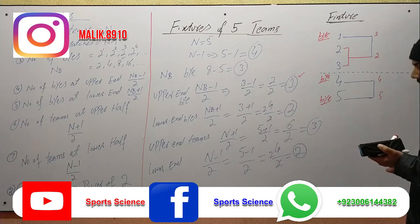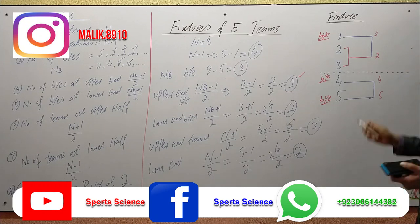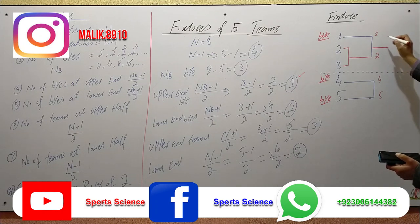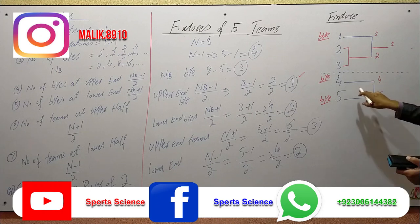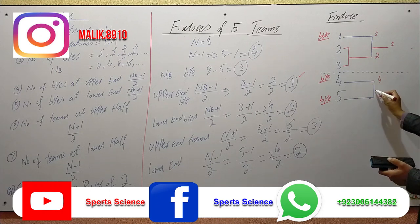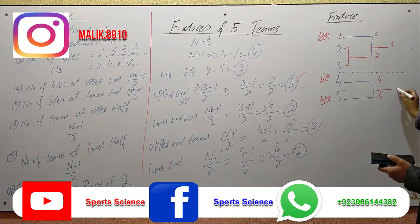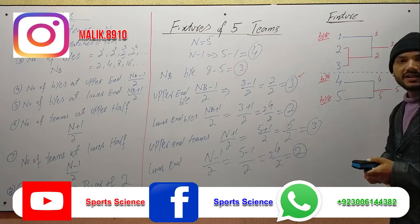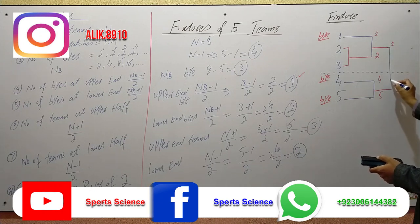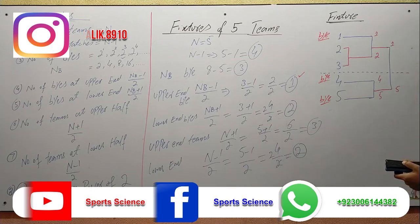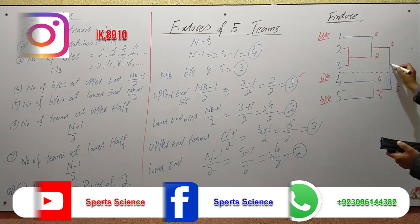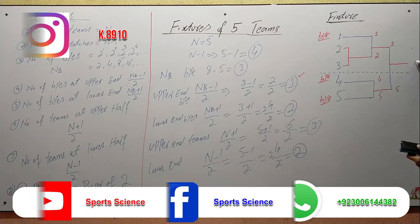Now let's see the next round. For example, team number 1 has won their bye and advances. Team number 4 and team number 5 also advance through their byes. The winner of the match between teams 2 and 3 also advances. Now two teams have won and move to the next round.